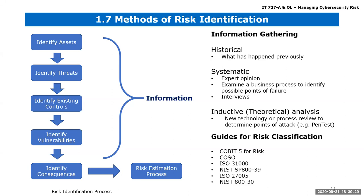For example, NIST 800-39 is out there where different agencies — defense, health, civilian — can look at it and see if it helps them classify their risk. But DOD might have its own way of classifying risk, calling it impact levels: IL2, IL4, IL5, IL6. Or you find the generic names calling it low, moderate, and high.